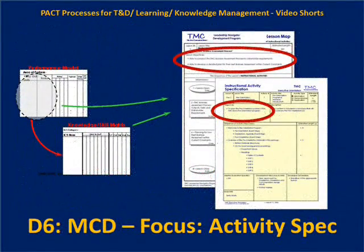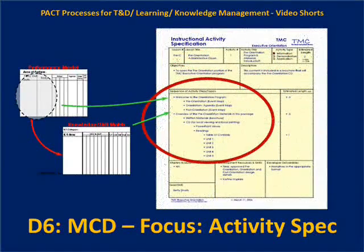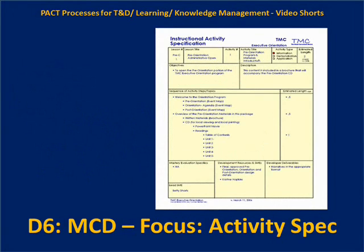Previously we've covered the learning objectives from the lesson map as they cascade down into the instructional activity specification. The content from the performance model and the knowledge and skill matrices eventually resides at this level of design — the activity spec. This instructional activity specification would be given to the developers to bring clarity to exactly what they are to produce.